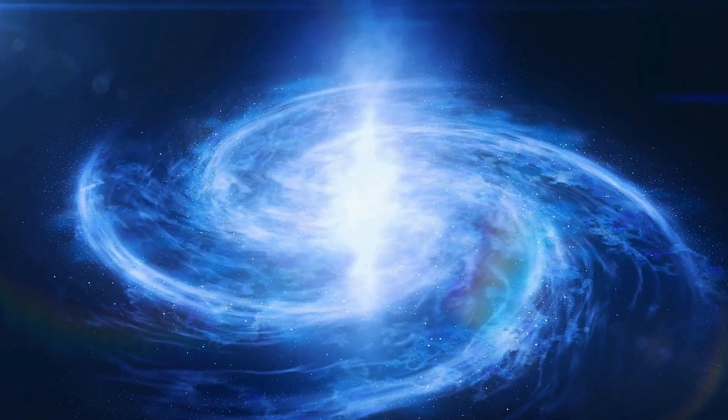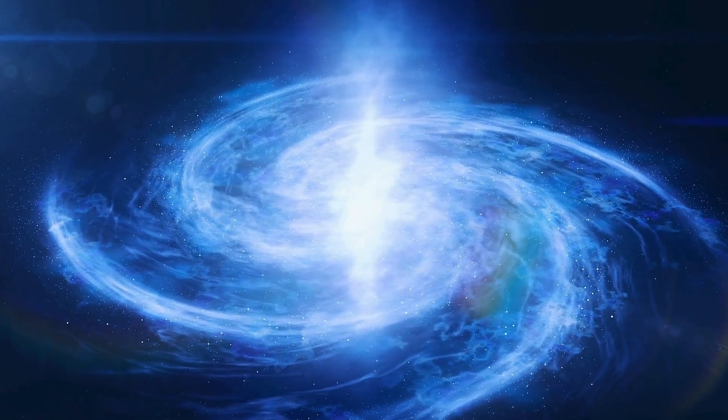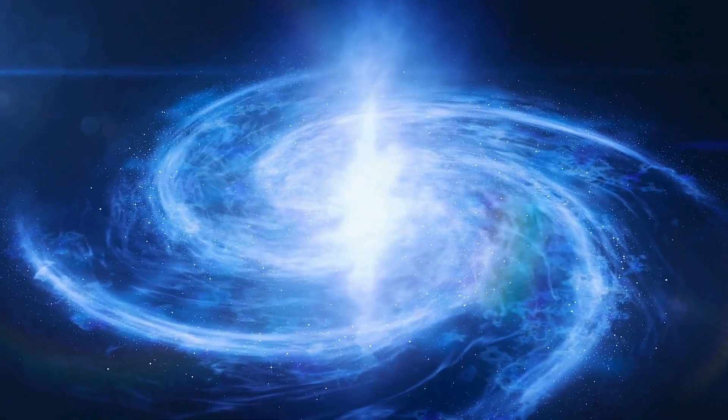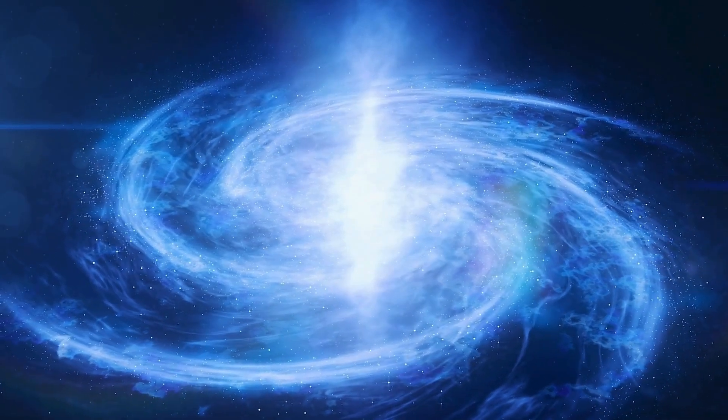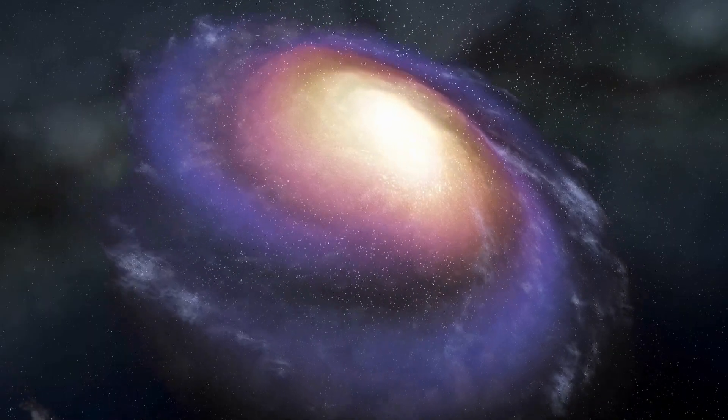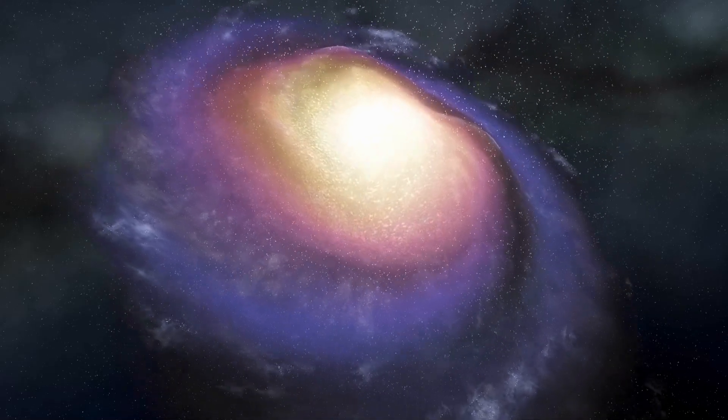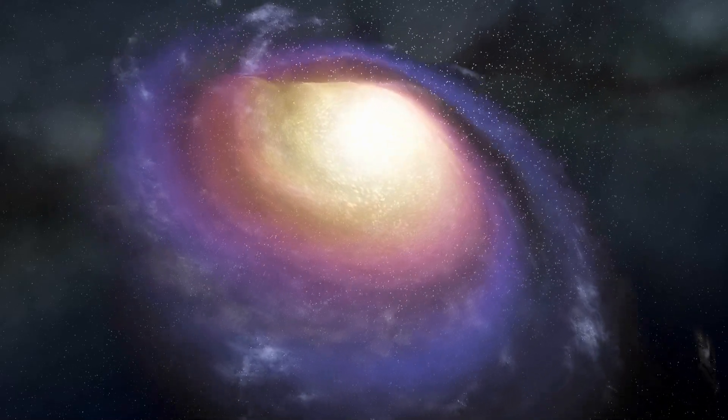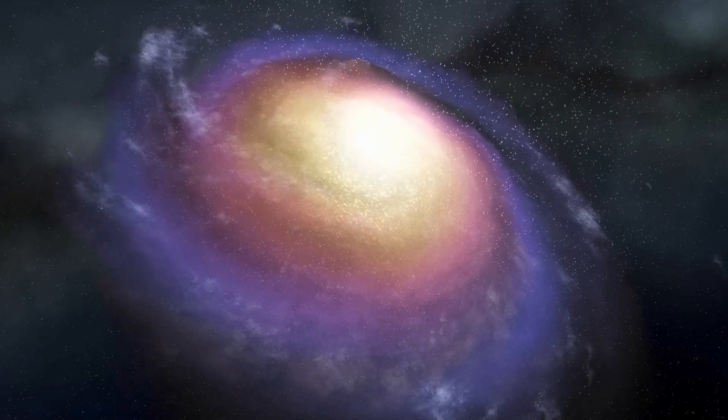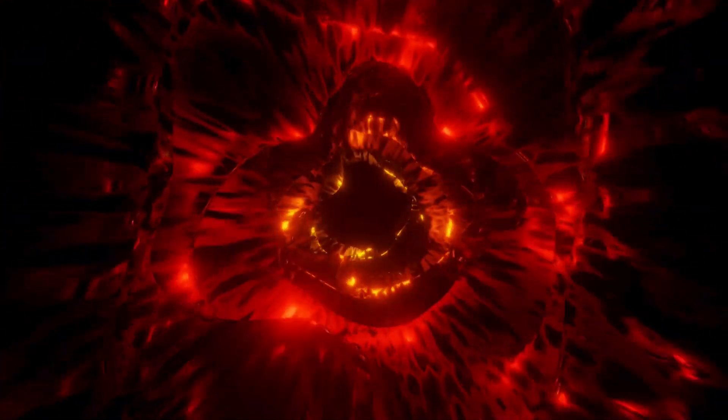But why does this red giant matter so much to us? Betelgeuse stands out not only for its brightness but also for its history and significance in human culture. Named after the Arabic term Yad al-Jawza, which means the Hand of Orion, Betelgeuse has been observed and documented by ancient civilizations for centuries. It has been a guide for travelers and a point of wonder for stargazers, with its reddish hue distinguishing it from other stars in the Orion constellation.